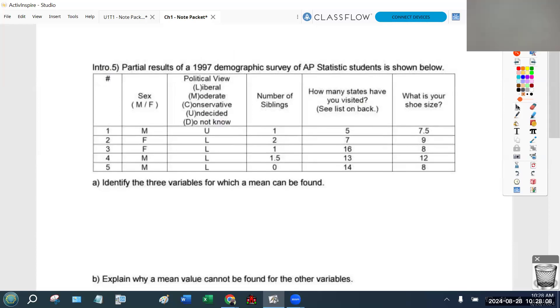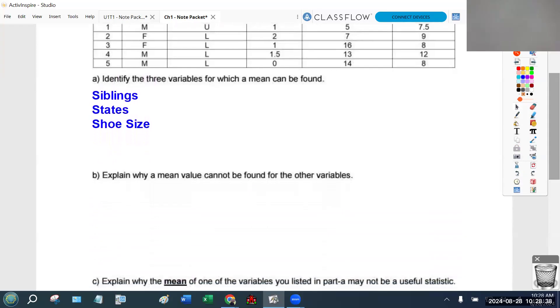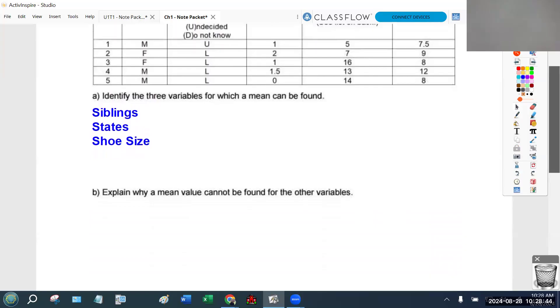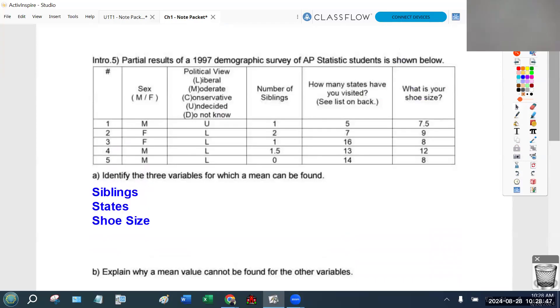So partial results of a 1997 demographic survey of AP statistics students is shown below. Part A says identify the three variables for which a mean can be found. Can I get a volunteer to volunteer? Can somebody volunteer the three variables that you can find a mean for? Mamadou? Perfect. The last three in the chart. Number of siblings, states, and shoe size.